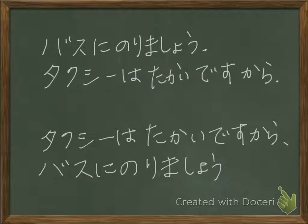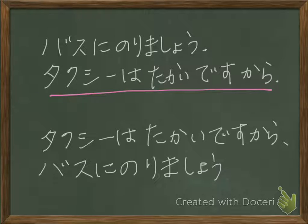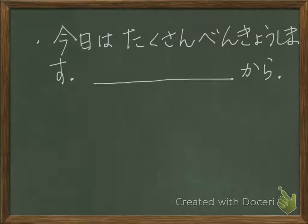Here is a sentence example: バスに乗りましょう — 'Let's take a bus.' タクシーは高いですから — 'Because a taxi is expensive.' That is the reason sentence. You can also combine these into one sentence: タクシーは高いですから、バスに乗りましょう。